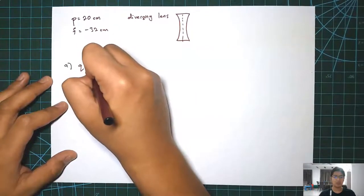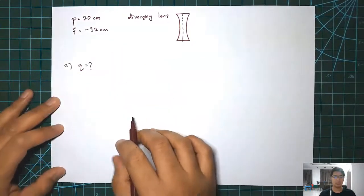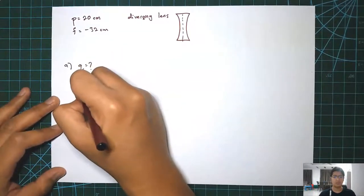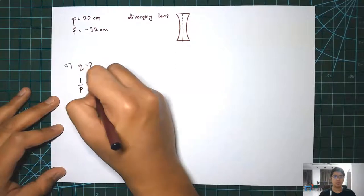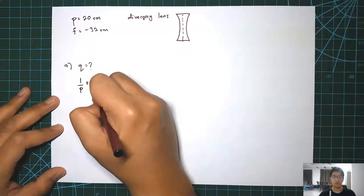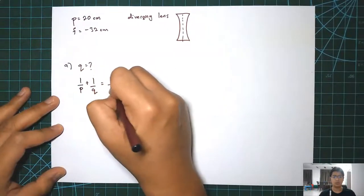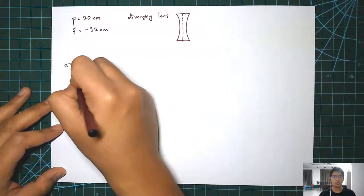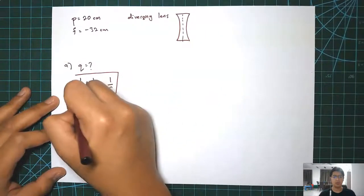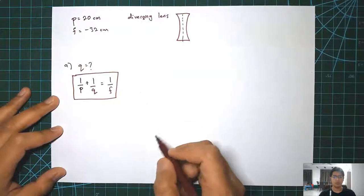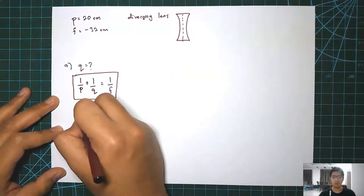The first question asks about the image distance. We need to use the mirror equation or the lens equation.